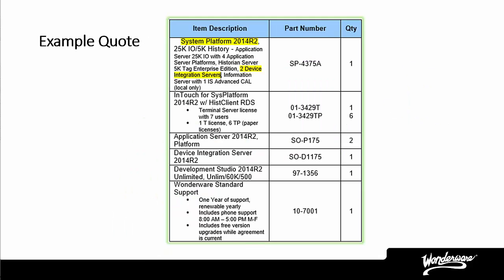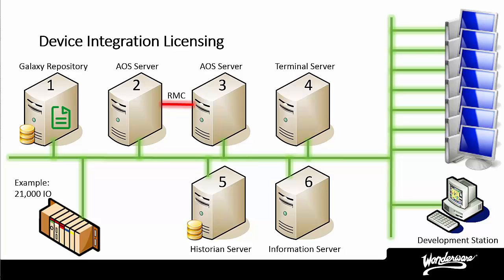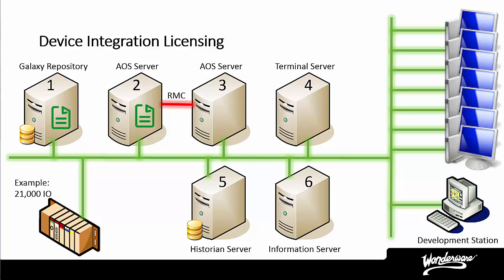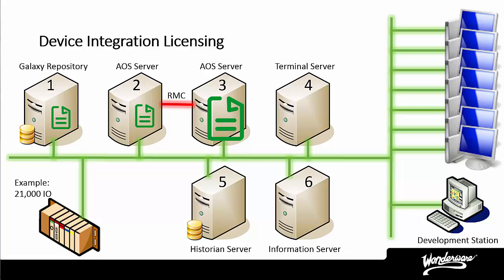Now let's look at the example quote again. You can see that the System Platform license comes with two device integration licenses as shown on the quote. If you need an additional device integration license, you will see a line on the quote similar to the one highlighted. Typically the DA Server — and hence the device integration license — is run on the AOS nodes, though some customers choose to put DA Servers on a separate computer. The device integration license is installed on the AOS node, and if you have a need for redundancy, you will get a second device integration license installed on the second redundant AOS computer.